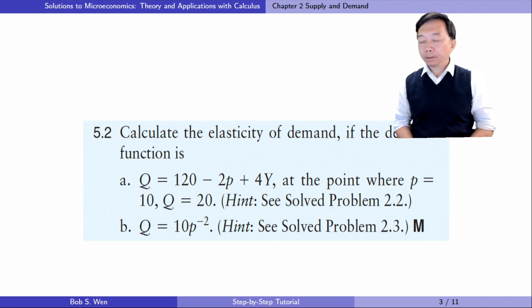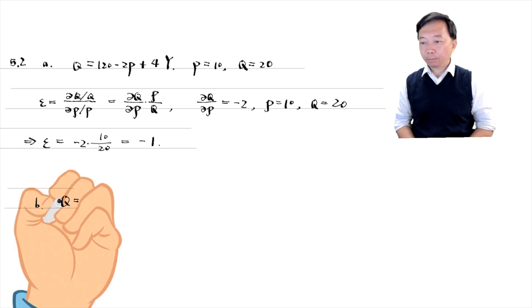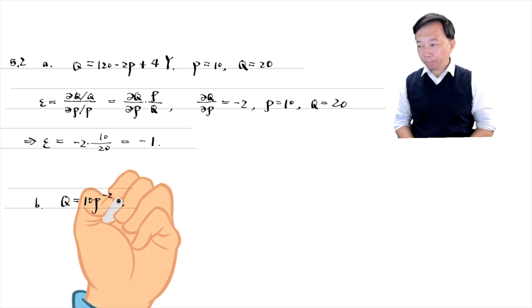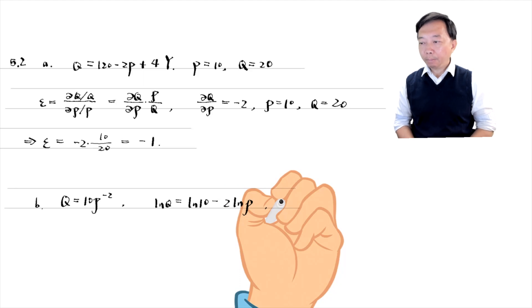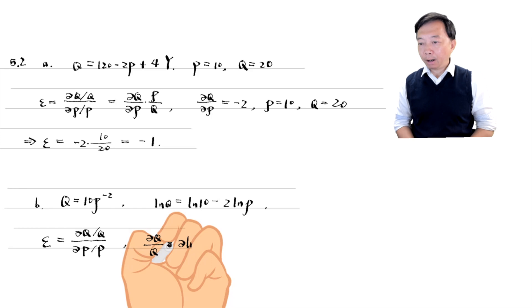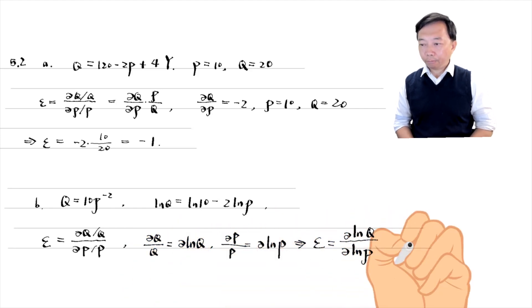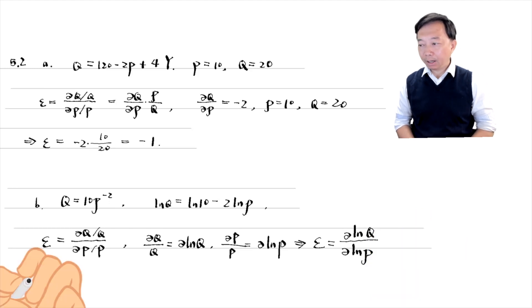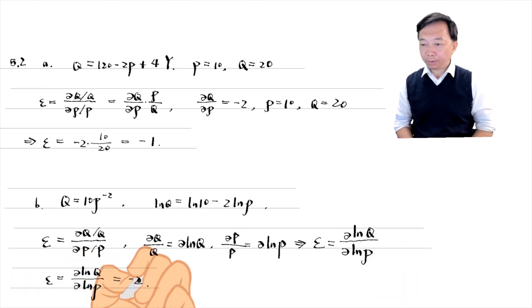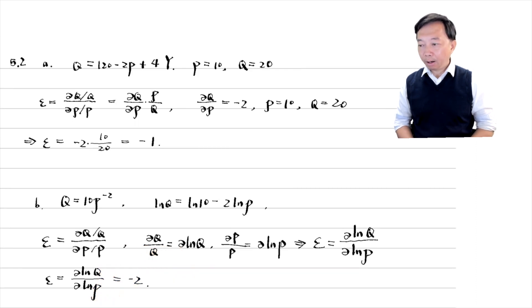In part two, it is a constant elasticity demand function. We can take the natural logarithms of both sides and write the exponential demand function as a log-linear demand function. The price elasticity of demand can be written as the ratio of partial log quantity to partial log price. This is a useful expression for the elasticity. For a log-linear demand function, we can immediately obtain the elasticity, which is minus 2 in this case. We find that the price elasticity of demand is the coefficient of the power, so it is called the constant elasticity demand function.